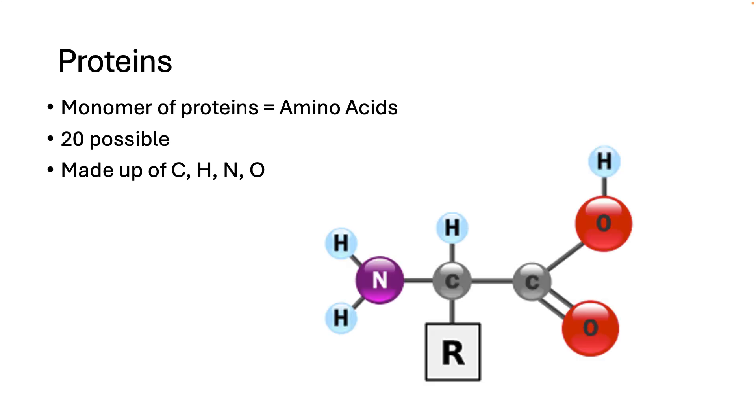There are 20 possible amino acids and each amino acid has a specific layout. It is composed of carbons, hydrogens, two oxygens, and a nitrogen. Remember that carbohydrates didn't contain nitrogen. The R group is different between the 20 different amino acids.